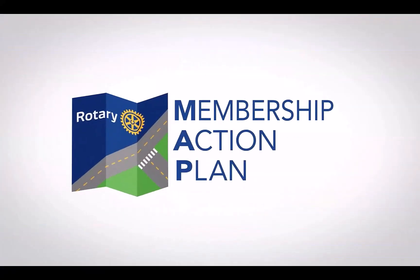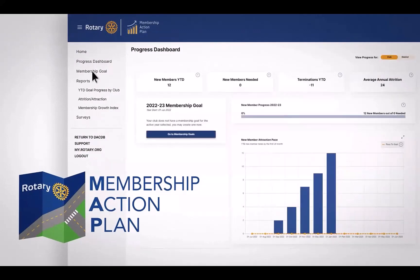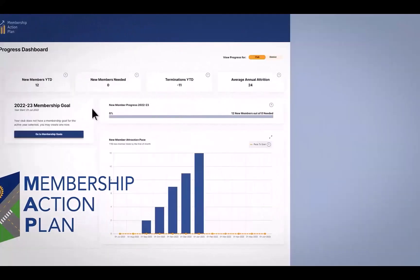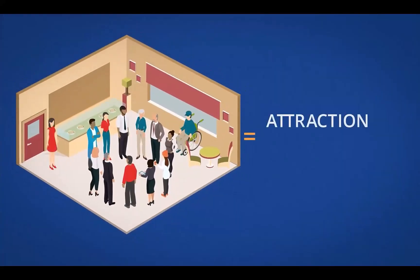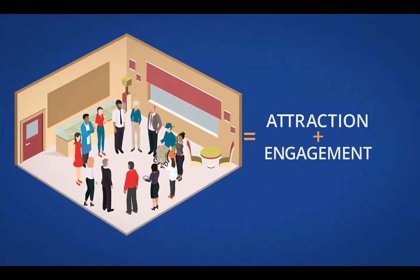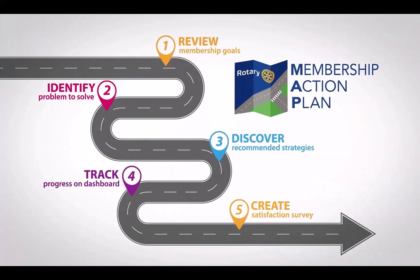As a volunteer organization, most of us don't have the time to search for information or ideas about growing members in our clubs. The Membership Action Plan makes it easy. On our interactive website, you'll find a toolbox full of easy-to-implement strategies along with real-time data about your club's membership. The only formula for consistent membership growth is intentional work on both attraction and engagement. By following the Membership Action Plan, you'll gain insight on accelerating membership growth, confidence on engaging current members, and clarity in making your club irresistible.